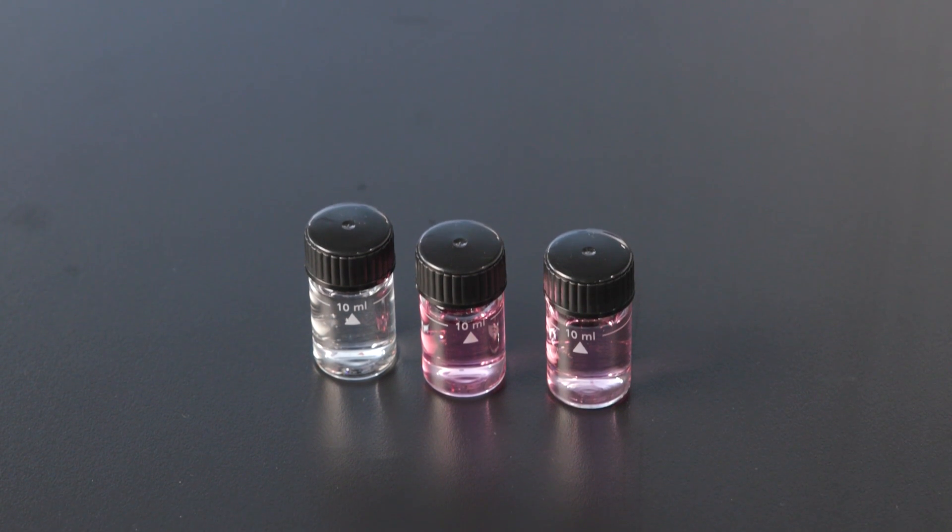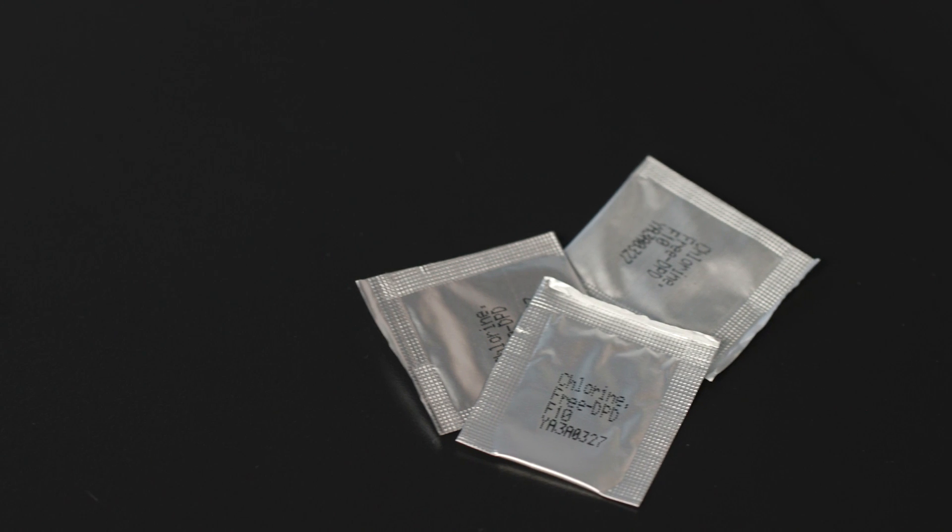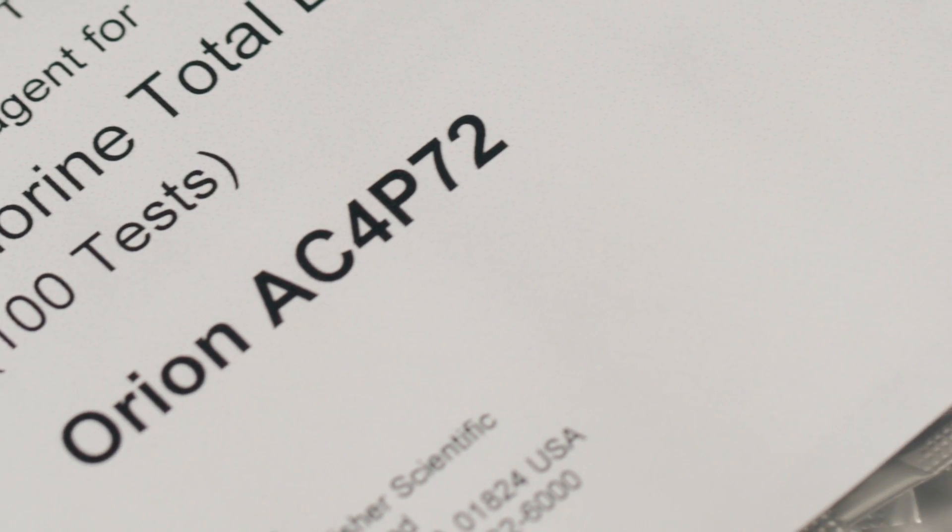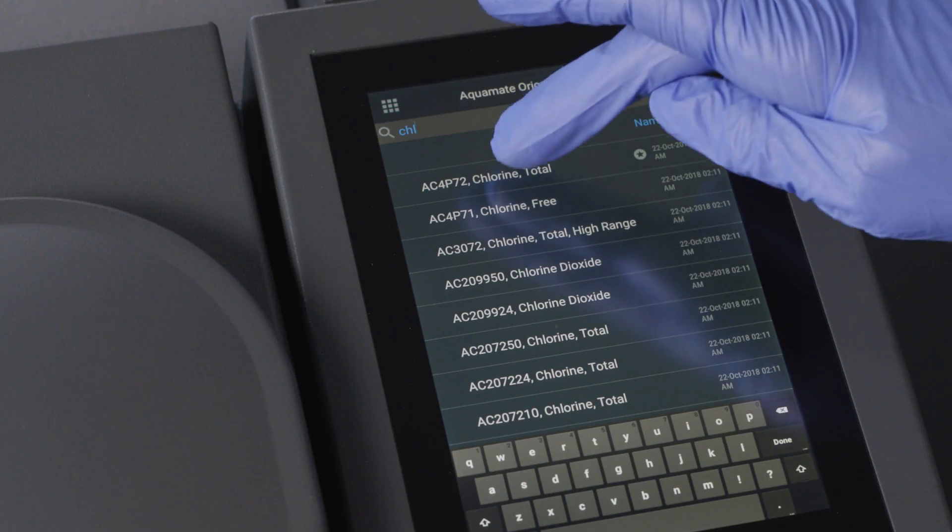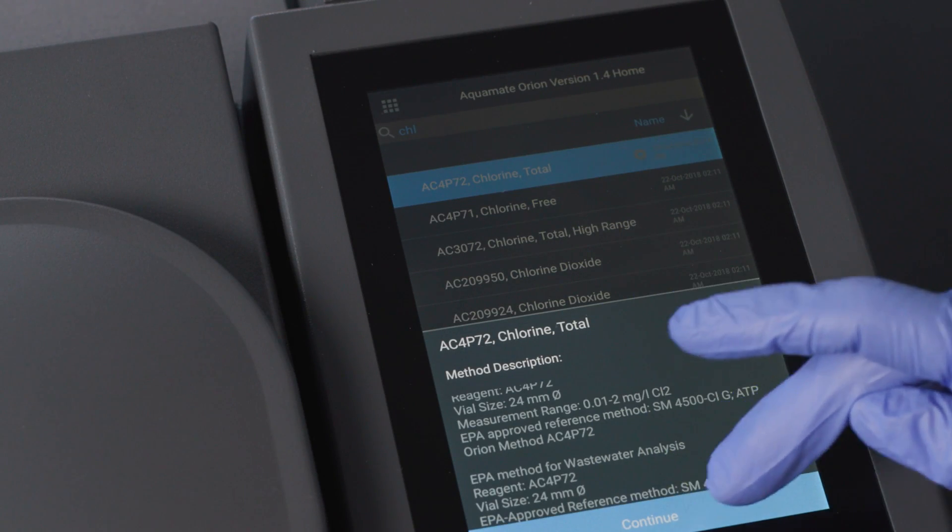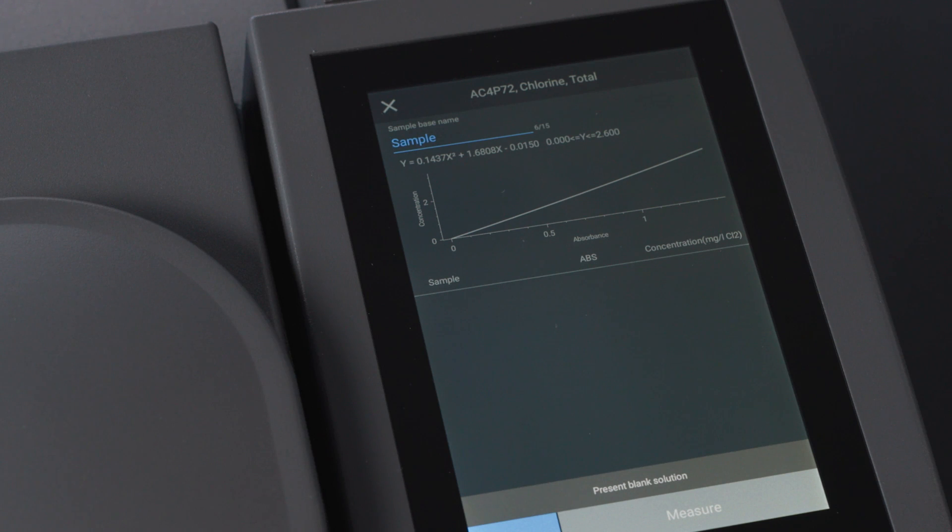These were prepared using Thermo Scientific Orion AquaFast total chlorine reagent powder packs. The part number is shown here on the package and correlates to the method on the Aquamate AC4P72. The reagent can be conveniently ordered using this same catalog number.